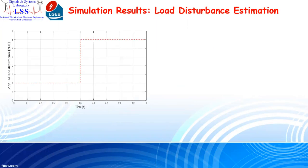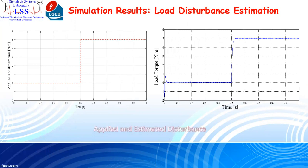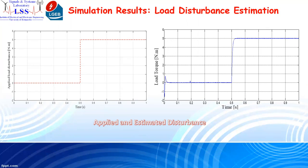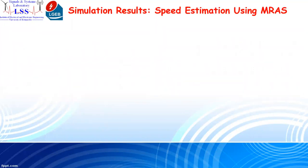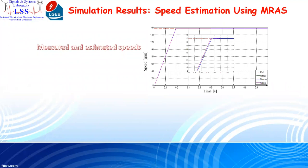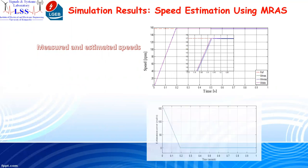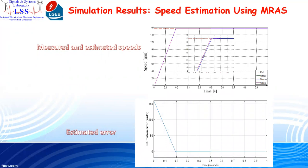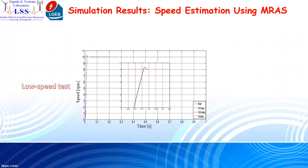The second simulation phase shows the applied disturbance on the system and the estimated disturbance using the disturbance observer. The estimated quantity correctly follows the applied disturbance, reflecting the effectiveness of the proposed disturbance observer. In the third phase, we show the rotor speed quantities — the measured speed, the speed estimated using MRAS, and the speed estimated using the disturbance observer. The estimation error converges to zero in steady state. Under a low-speed test at 10 radians per second, all speed quantities show perfect superposition, demonstrating performance under hard operating conditions.